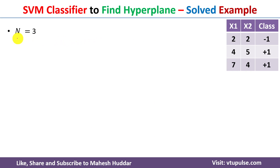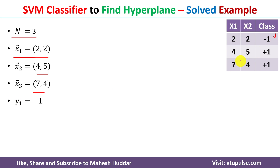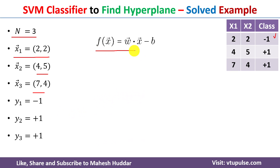There are three input vectors, so n = 3. The first input vector x1 is (2, 2), the second x2 is (4, 5), and the third x3 is (7, 4). The label for the first input vector y1 is −1, y2 is +1, and y3 is +1. This is how the hyperplane equation looks in the SVM classifier.